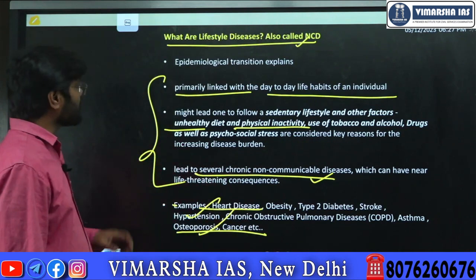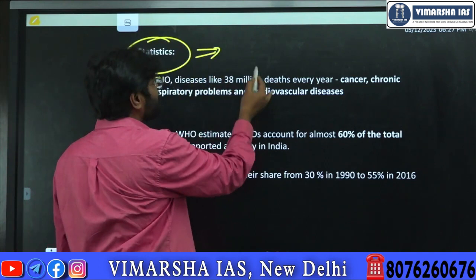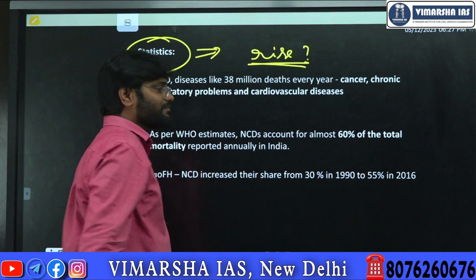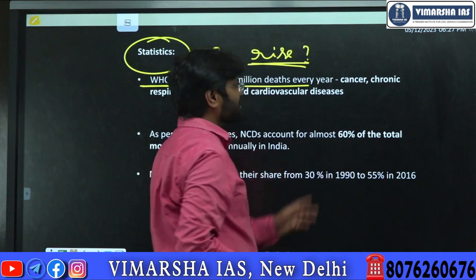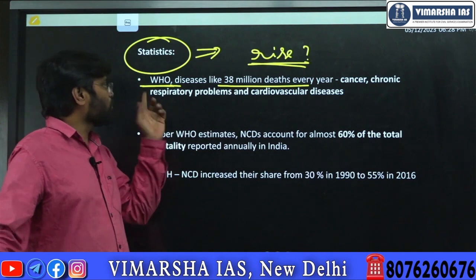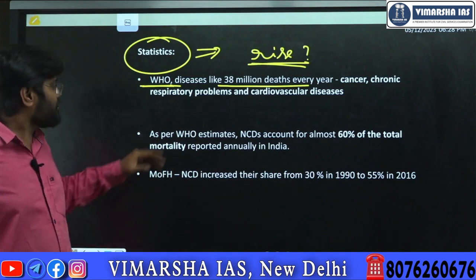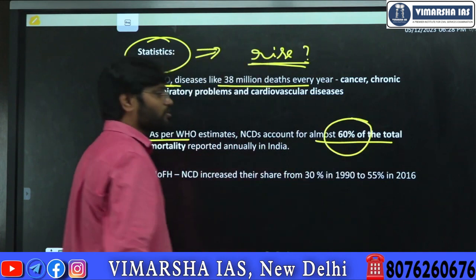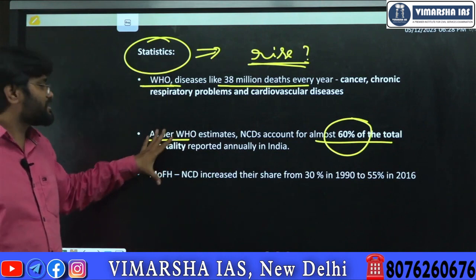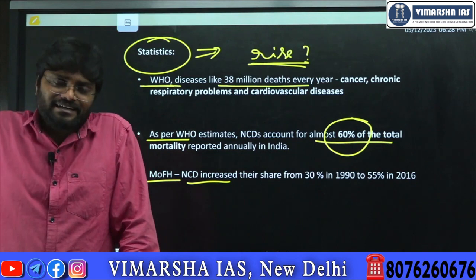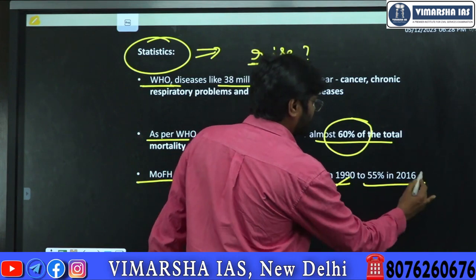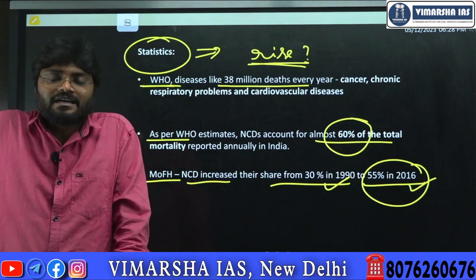Regarding statistics — the question is, are lifestyle diseases on the rise? To prove this, we need statistics officially published by various agencies. According to the WHO, every year 38 million people die because of lifestyle diseases, especially cancer, chronic respiratory problems, and cardiovascular problems. In India, nearly 60% of total mortality every year is related to lifestyle diseases. According to the Ministry of Family Welfare and Health, NCDs rose from 30% in 1990 to 55% in 2016. These statistics indicate that lifestyle-related diseases are on the rise.